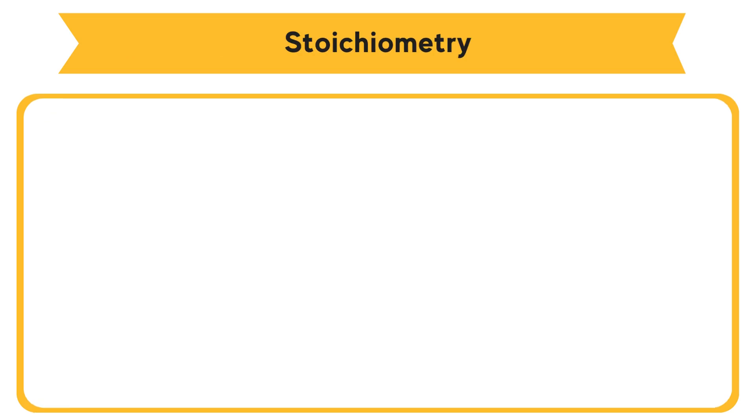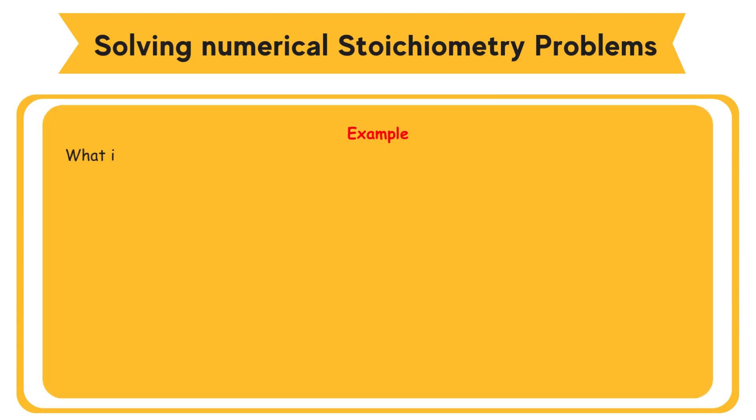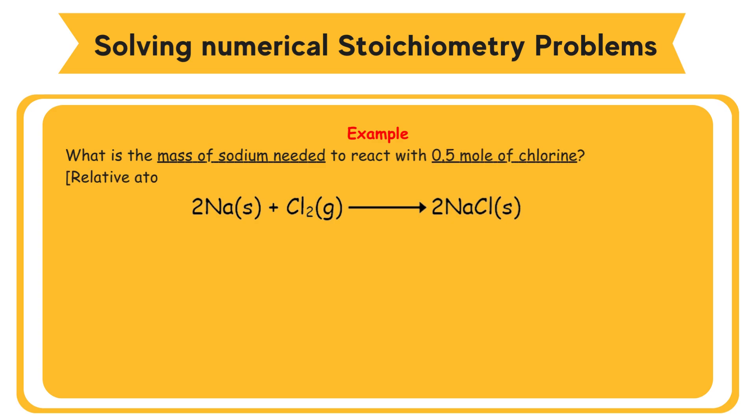Solving numerical stoichiometry problems. Stoichiometry is a study of quantitative composition of substances involved in chemical reactions. Example: What is the mass of sodium needed to react with 0.5 mole of chlorine? Relative atomic mass Na equals 23.